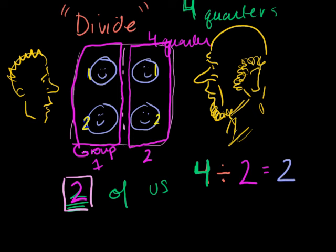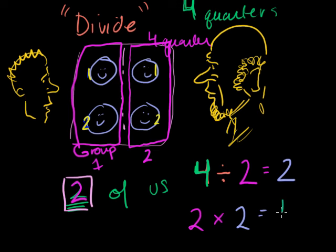I wanted to show you that division is something you've been using all along. And an important takeaway is that on some level, division is the opposite of multiplication. If I said I had two groups of two quarters, I would multiply the two groups times the two quarters each, and I would have four quarters. So on some level, these are saying the same thing. Let's do a couple more examples.